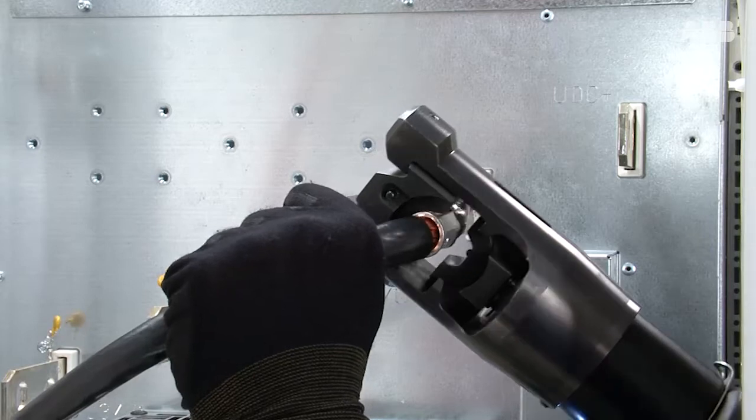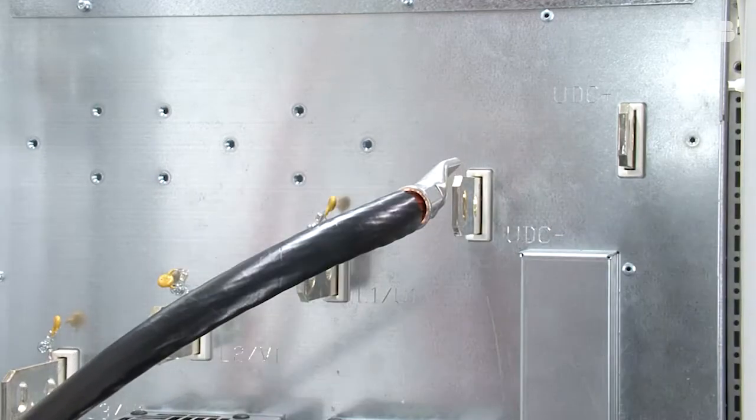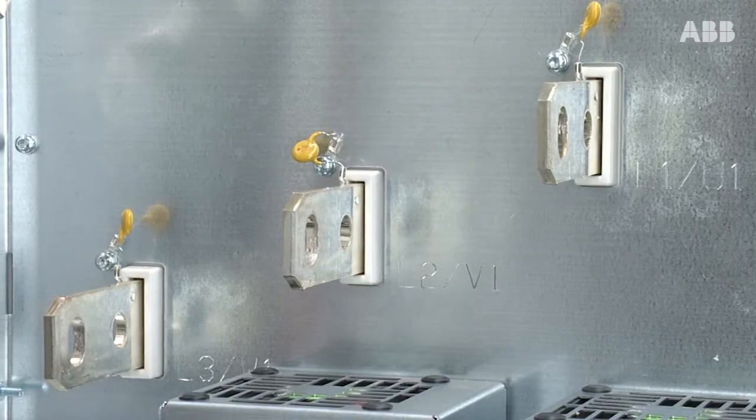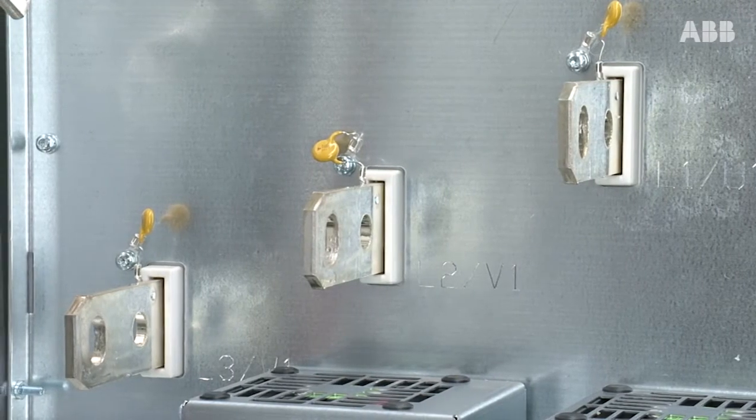Cut the cables to the correct length and install the cable lugs on the ends of the cables. This allows the cables to be attached to the module terminals.